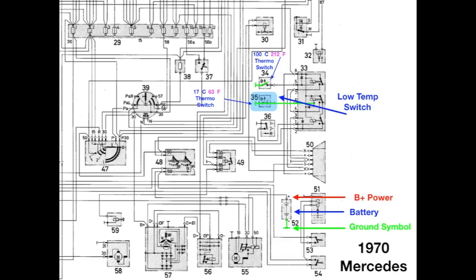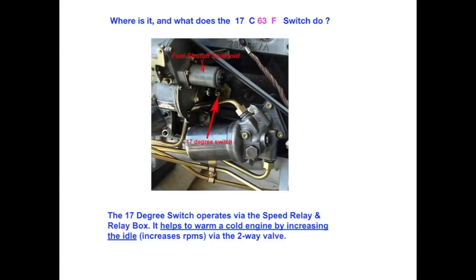We also have a low temperature switch. Where is it, and what does it do? The low temperature switch operates by the same speed relay and relay box, and it helps warm a cold engine by increasing the idle by way of the two-way valve. I want you to notice that it, too, is a one-wire switch. So, it gets its ground by being screwed into the engine block.